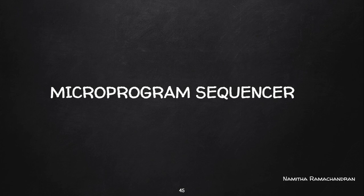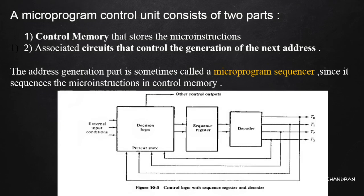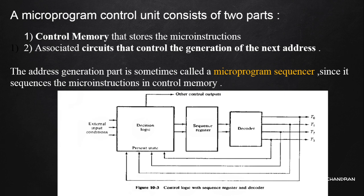Welcome back to this tutorial. In this video we will discuss the organization of a microprogram sequencer. First, consider the parts of a microprogram-based control unit. Here we have a control memory that stores the micro instructions of a micro program as its memory words, and associated circuitry for generating the next address of the micro instruction to be executed. This address generating unit is called the microprogram sequencer.